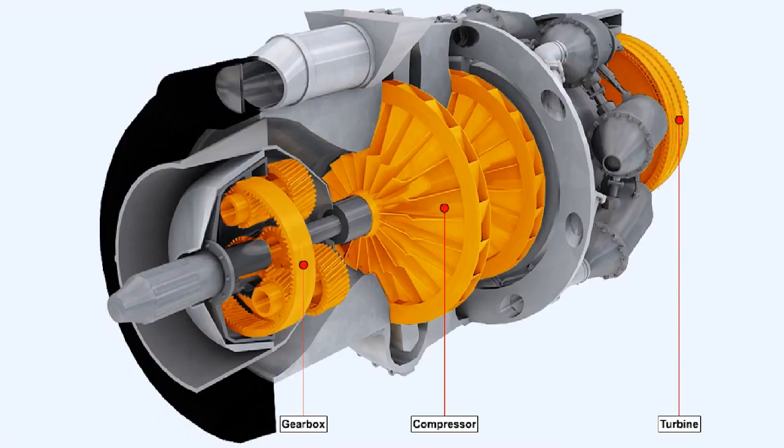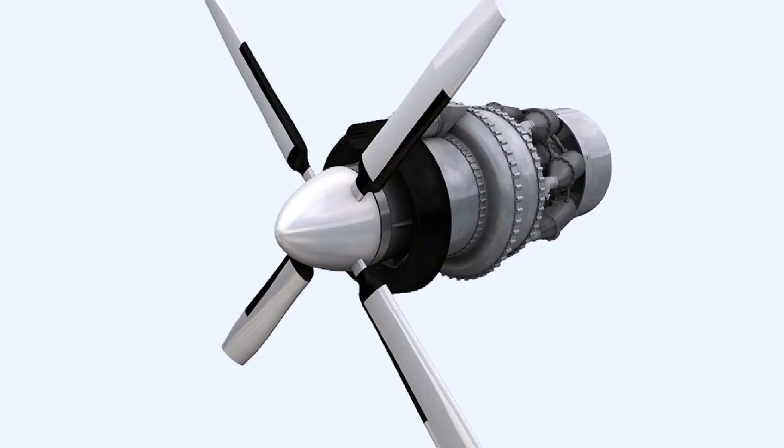The turbine extracts the different forms of energy from the hot gases that flow through it and converts that energy into mechanical energy which it uses to drive the compressor and gearboxes connected to it. Gearboxes can be used to operate accessories or in the case of engines that do not use predominantly jet propulsion to generate their thrust, to power propellers or rotors.